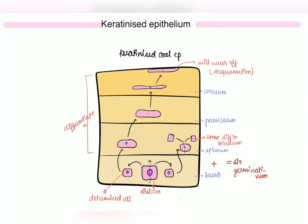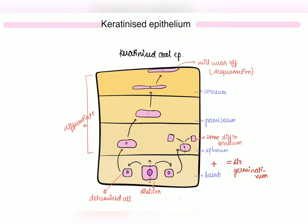Now we'll talk about the first division of oral epithelium: keratinized epithelium. This epithelium is arranged in four layers — stratum basale, then stratum spinosum, then stratum granulosum, and then stratum corneum.